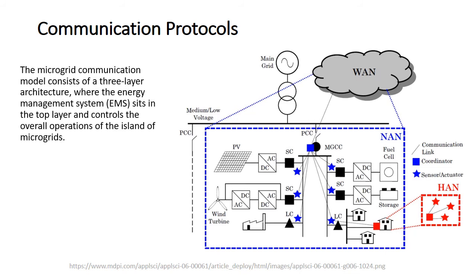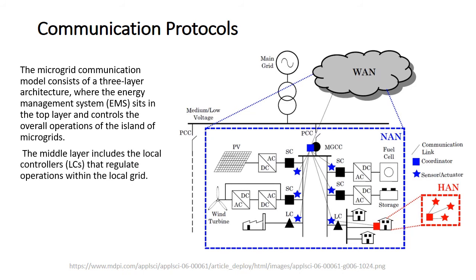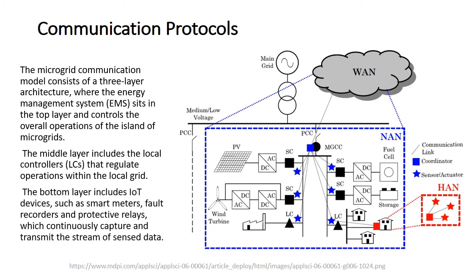The microgrid communication model consists of a three-layer architecture. The energy management system sits in the top layer and controls the overall operations of the microgrid. The middle layer includes local controllers that regulate operations within the local grid. The bottom layer includes IoT devices such as smart meters, fault recorders, and protective relays, which continuously capture and transmit streams of sensed data.